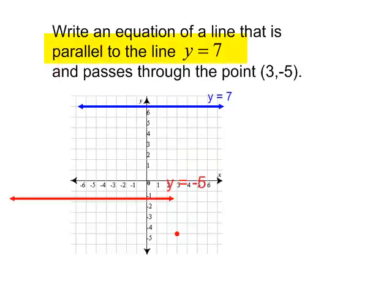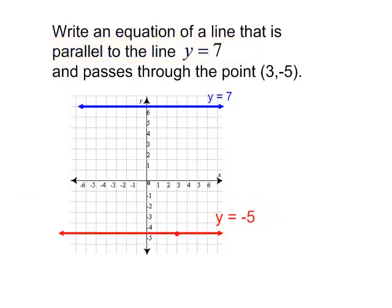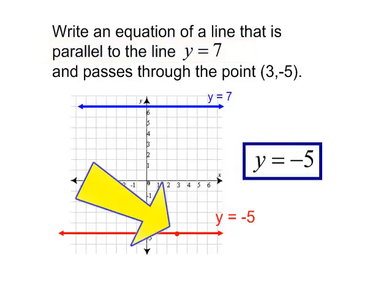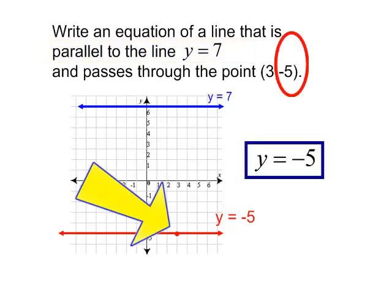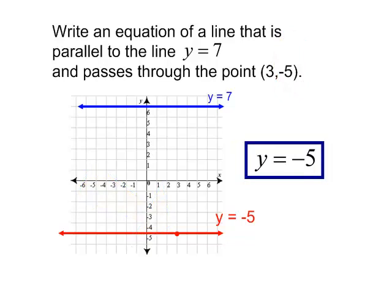Well, if it's parallel, I want another y equal line. So I should be able to quickly know that if I want to write an equation of a line parallel to y equals 7, it will be another y line, and if it's going through this point (3, negative 5), the y is negative 5. My answer is y equals negative 5.